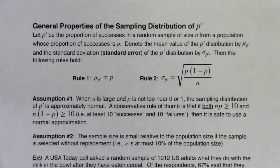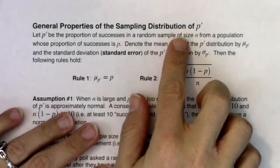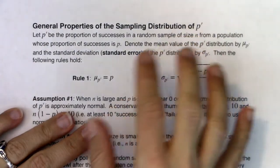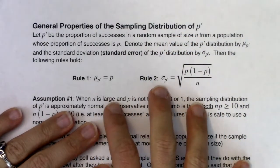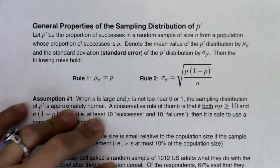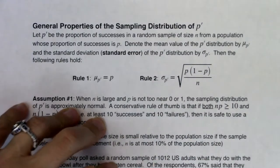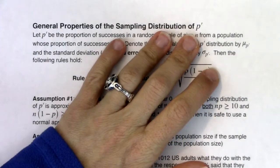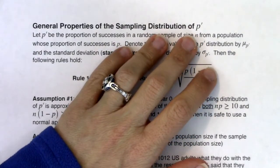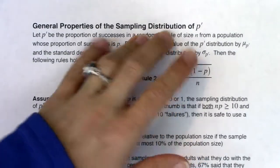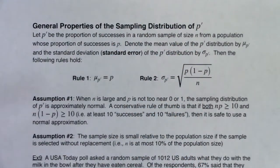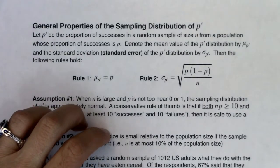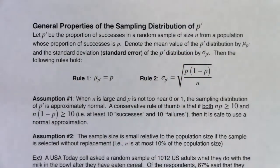Hey Math 43, let's pick up our last distribution — it's going to be the sampling distribution of p-prime. It's been a while since we've looked at categorical data. We've been dealing with numerical data since chapter 4. So we're going to flip back to categorical data and pick up our second sampling distribution. We'll be taking random samples, looking at a categorical variable, and turning frequency counts into relative frequency counts or proportions.